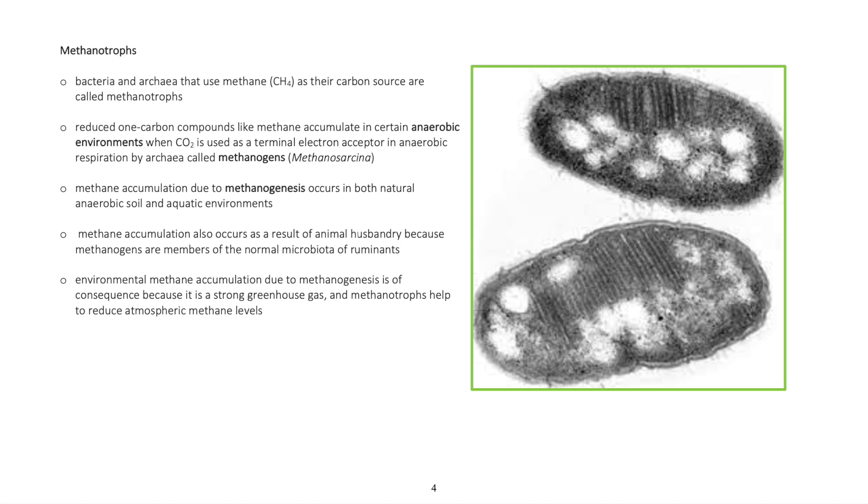Environmental methane accumulation due to methanogenesis is of consequence because it is a strong greenhouse gas, and methanotrophs help to reduce atmospheric methane levels.